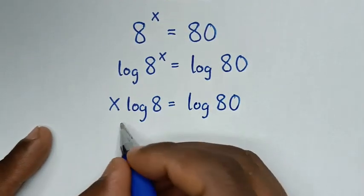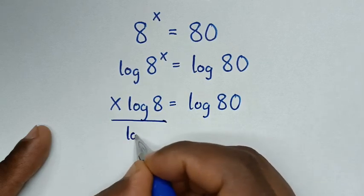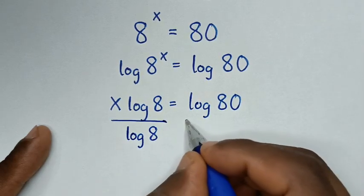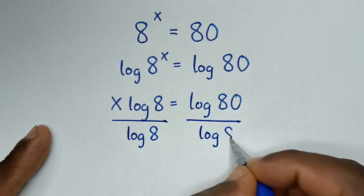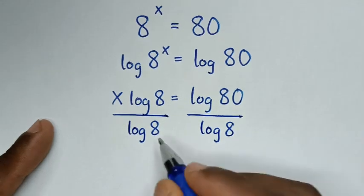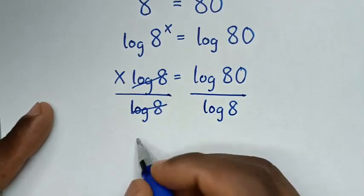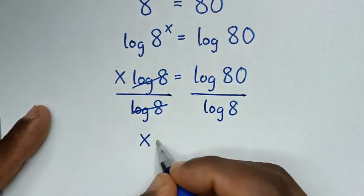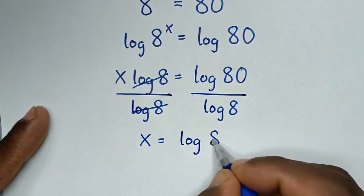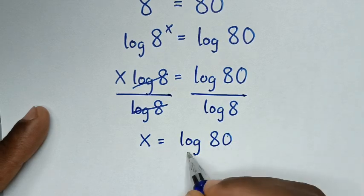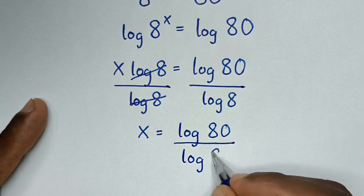Then we'll divide by log of 8 in both sides. So here over log of 8 and here over log of 8. So this and this will cancel. Then it will be x is equal to log of 8 over log of 8.